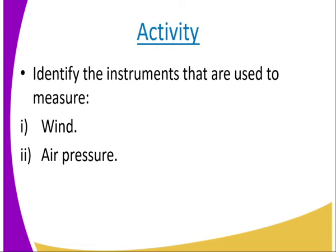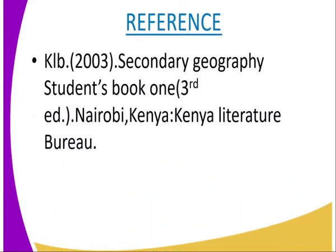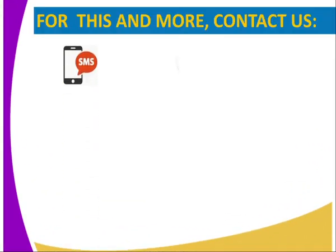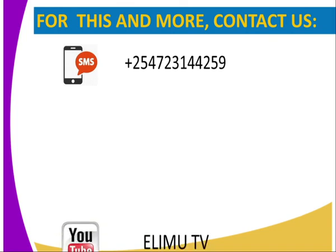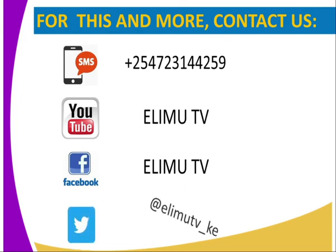The activity for today: identify the instruments used to measure wind and air pressure. For more information, you can visit the KLB 2003 Secondary Geography Student Book 1. You can also reach us through SMS, YouTube, Facebook, or Twitter. Stay tuned. Thank you.